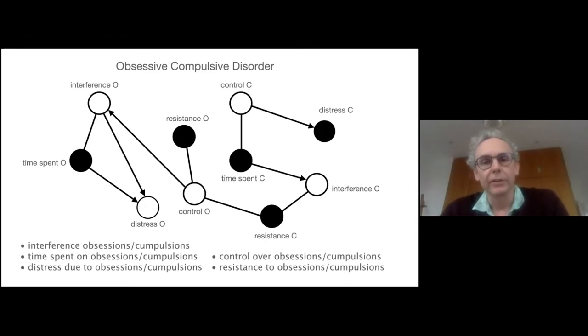You see a graph here which is something that we think as a reasonable representation of such disorders. You see particular relations between these nodes which represent the variables like control of compulsions.